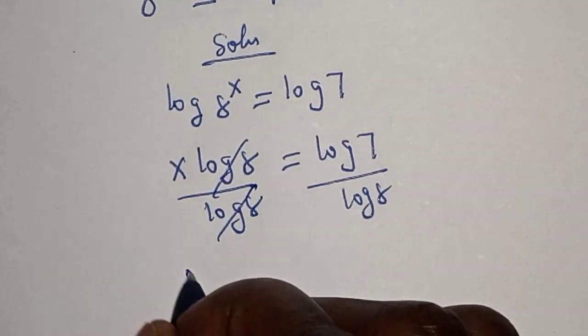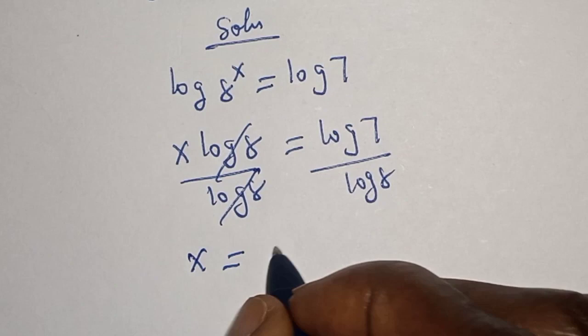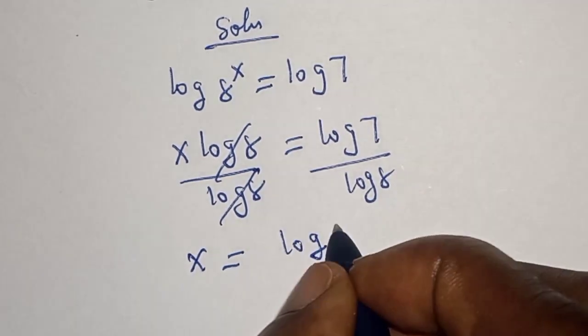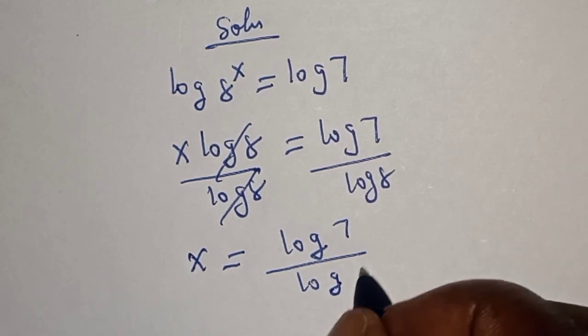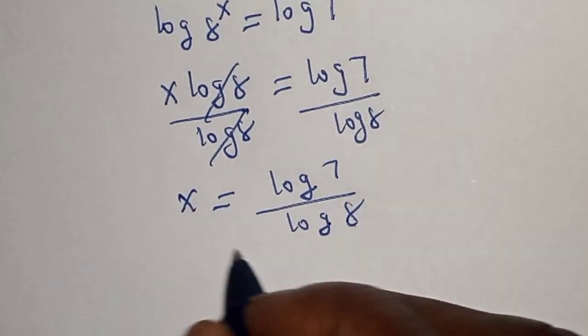This one will cancel. This x is equal to log 7 over log 8.